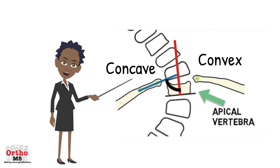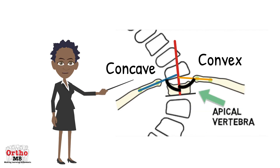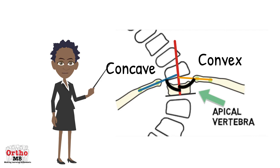In order to calculate the rib vertebra angle difference, you must repeat the process on the convex side. The rib vertebra angle difference is the difference between the RVA on the concave side and that on the convex side.